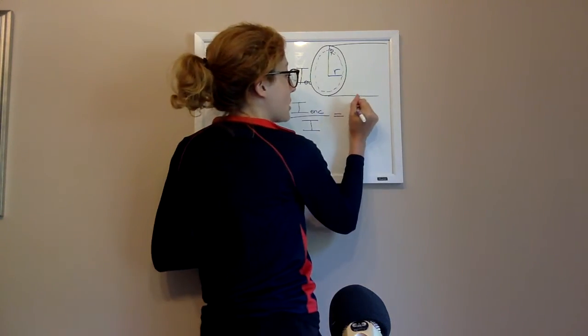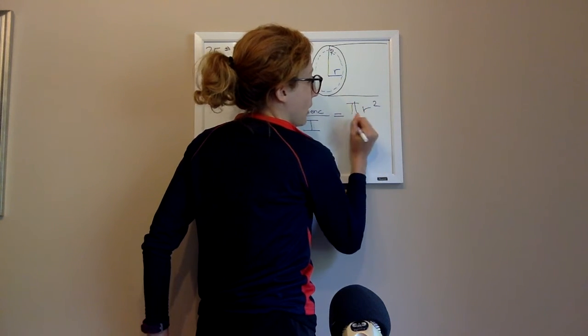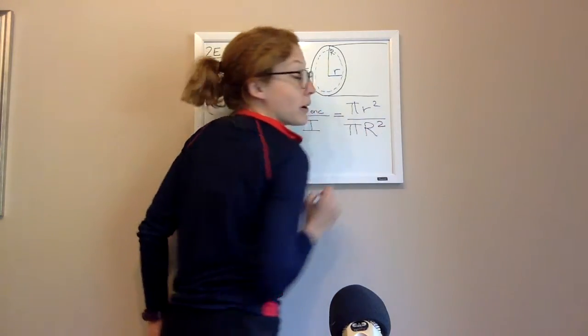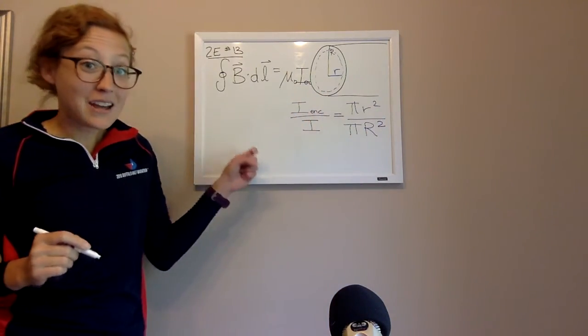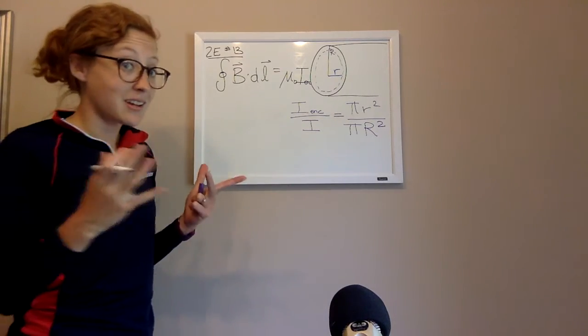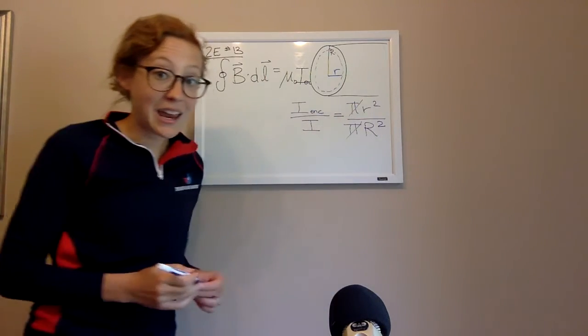So in other words, it's going to be the area of that smaller blue circle, which is pi little r squared, divided by pi big R squared. So that I know to be true. So whenever I'm trying to find I enclosed, the trick that I think of is can I get the ratio with the total current. And so now I have pi's that cancel.